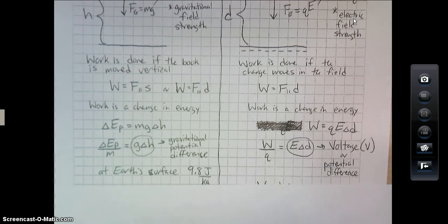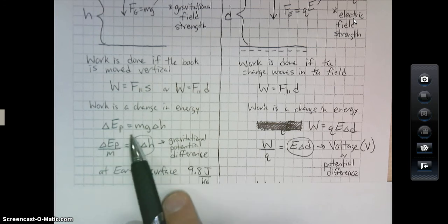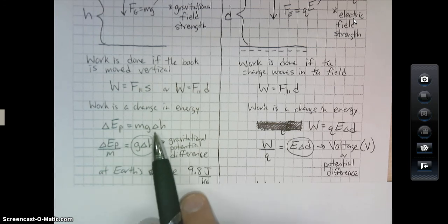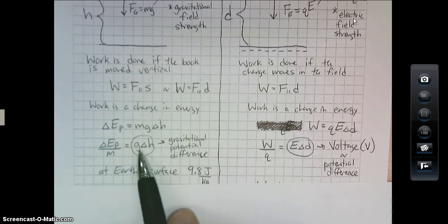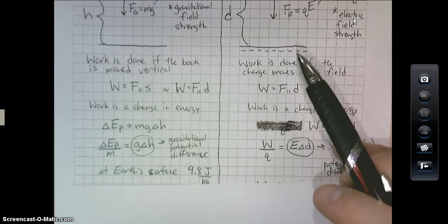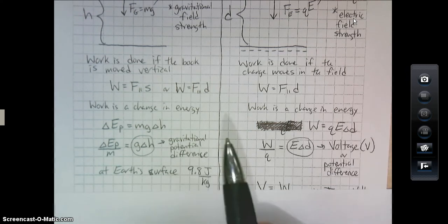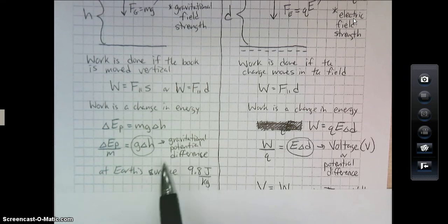So the next part is if we do a little rearranging. And this is a little new. We haven't really talked too much about this, but if I rearrange this particular equation, gravitational potential equation, so that the mass is on one side, this value of G delta H is often referred to as gravitational potential difference. Not that important, but it says at the Earth's surface, it's 9.8 joules per kilogram. That's the value of the gravitational difference, joules per kilogram.